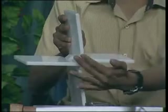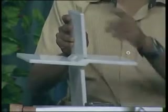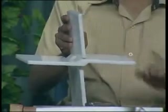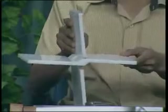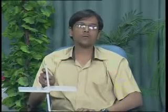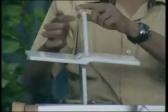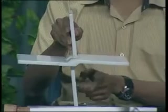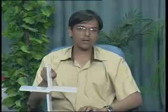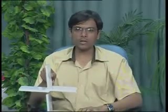The horizontal plane will always be in the horizontal direction and the vertical plane will always be in the vertical direction. This setup is divided into four quadrants: the first quadrant, second quadrant, third quadrant in the downward direction, and the fourth quadrant also in the downward direction.